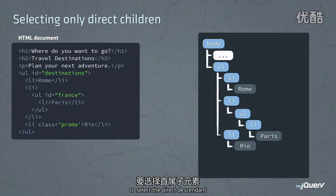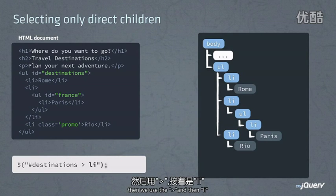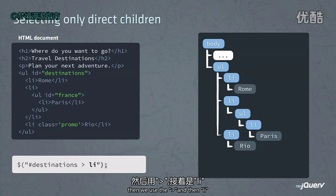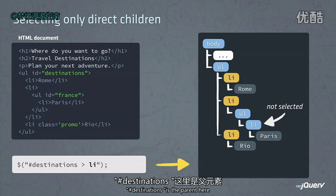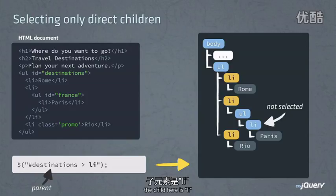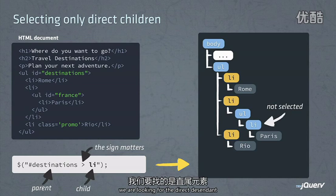To select the direct descendants, we specify #destinations, then we use the greater-than sign, and then li. You'll see in the DOM that the Paris list item does not get selected because we're only going after the direct descendants. #destinations is the parent, li is the child, and that greater-than sign is what tells jQuery that we're looking for the direct descendant.